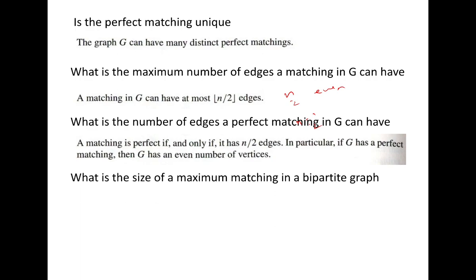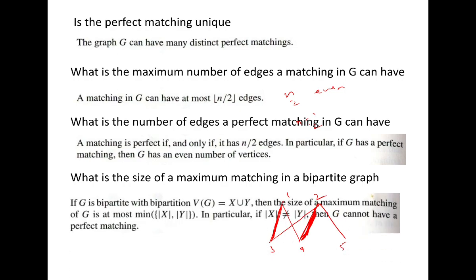What is the size of a maximum matching in a bipartite graph? Recall that a bipartite graph can be partitioned into two sets X and Y. The size of a maximum matching is at most min(|X|, |Y|). For example, in a graph with five vertices on one side, at most two independent edges can exist, and in some cases it can be even less.